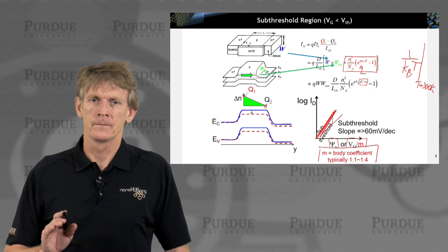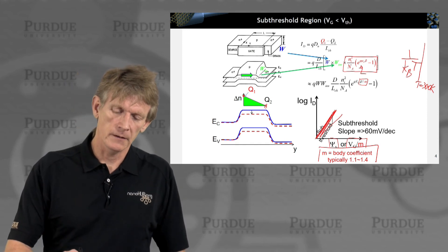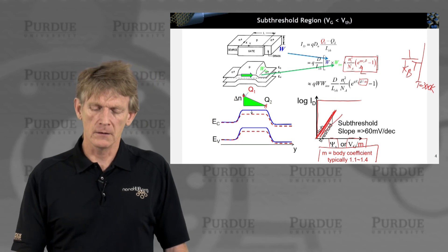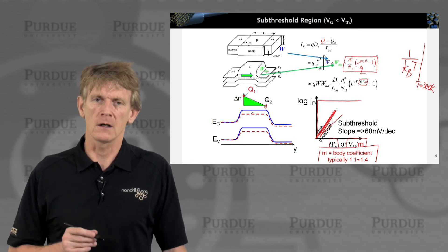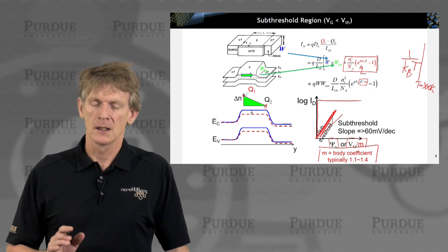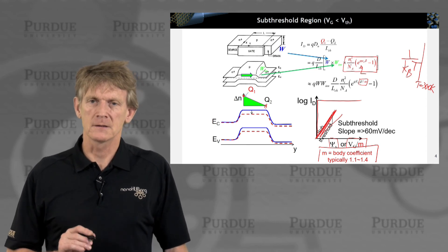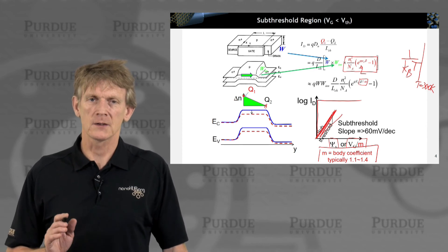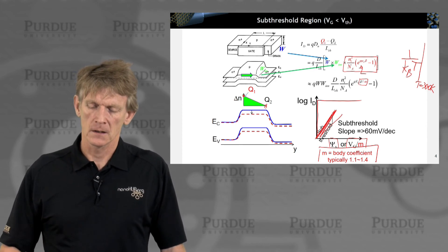Again, ideally, you would love to have a switch that turns on like this, with very little voltage, you can turn this thing on and off. But the fact in these devices is, it now turns on at 60 millivolts per decade, the best possible way in this kind of configuration.